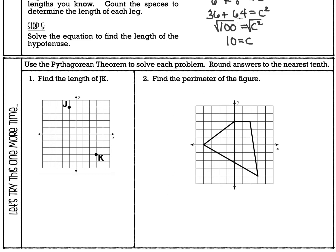So if we end up with numbers that are not perfect squares, that's okay — we'll just round them to the nearest tenth. First thing I'm going to do is draw a line segment from point J to point K, and then draw two more lines to turn this line segment into the hypotenuse of a right triangle. I'll draw a vertical line and then a horizontal line on the bottom. Count the spaces: one, two, three, four spaces across the bottom.